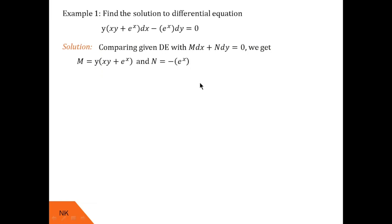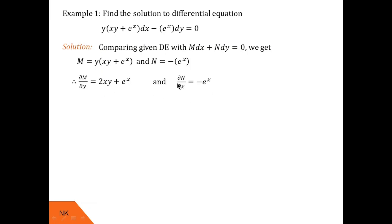Now we find ∂M/∂y and ∂N/∂x. In this case ∂M/∂y = 2xy + eˣ, whereas ∂N/∂x = −eˣ. Since ∂M/∂y and ∂N/∂x are not equal, we say the given differential equation is not exact.